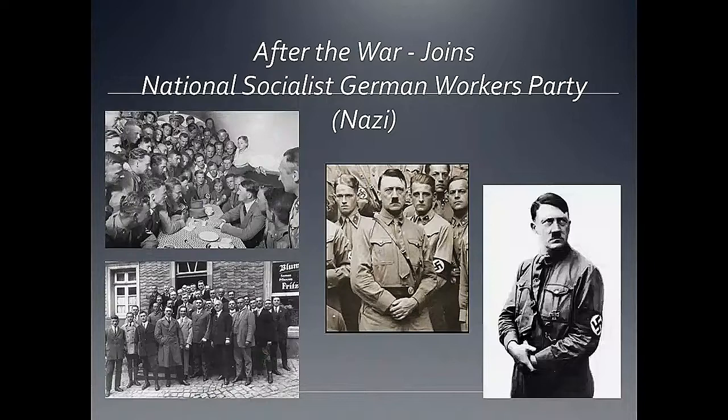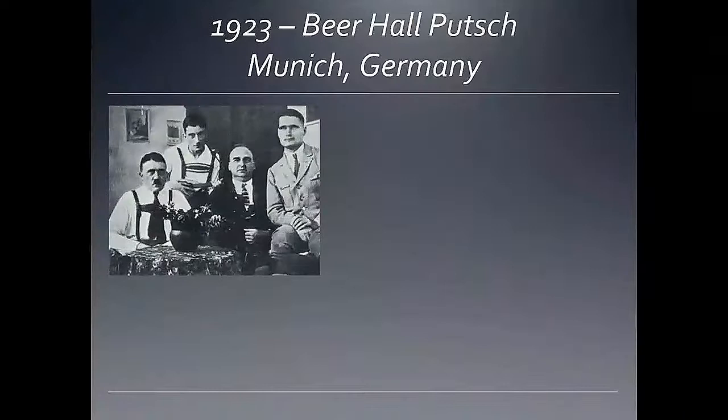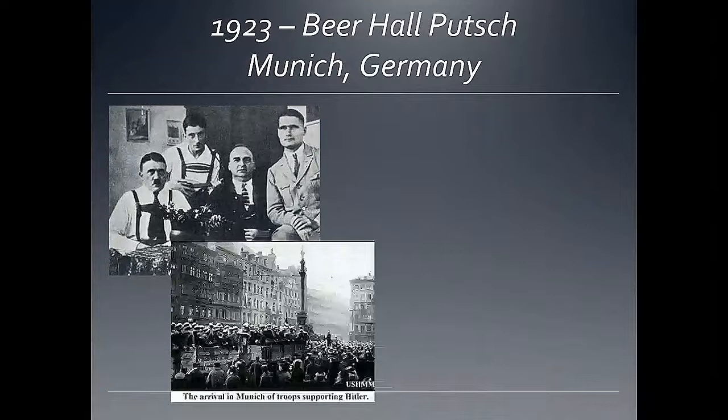By 1923, with hyperinflation raging, Hitler and the Nazis decided it was time to act. They led the Beer Hall Putsch in Munich, Germany — a plan to seize power in Munich in a coup d'état. From there, the Putsch would spark a revolution throughout Germany, with Munich as headquarters and power base, before marching on Berlin — very similar to Mussolini's march on Rome — and taking over Germany.